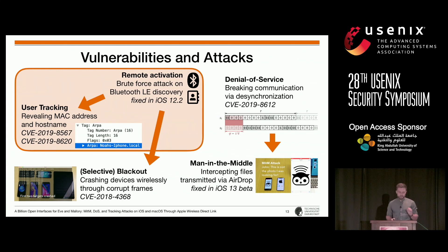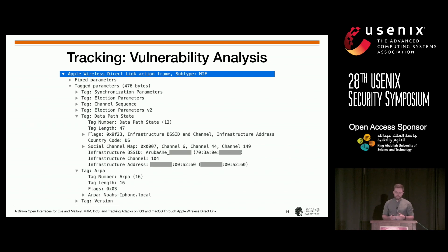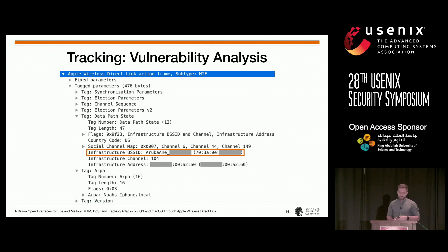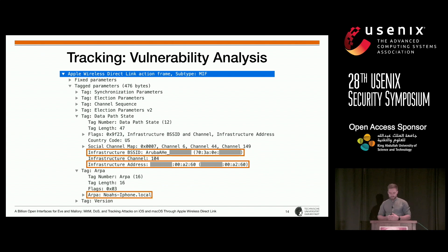Now I want to go into the details of some of the attacks, starting with the user tracking attack. The key problem we found was that AWDL broadcasts unencrypted control frames that contain identifiable information, such as the MAC address of the currently connected access point and the real MAC address of the Wi-Fi card, which effectively defeats MAC randomization. In addition, there is a protocol field that contains the host name of the device, which typically contains the user's name.